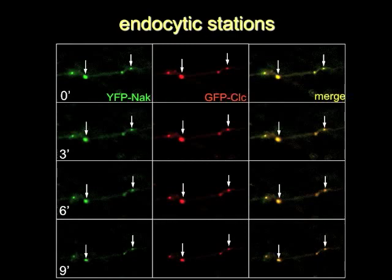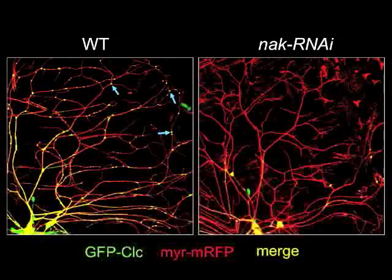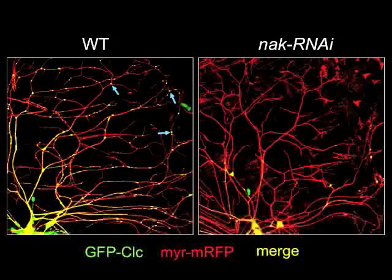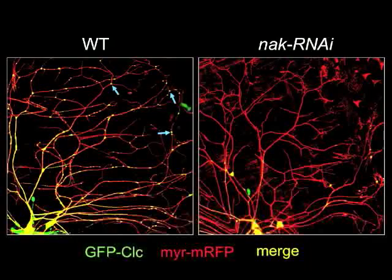Under time-lapse recording, we found that these endocytic puncta stay immobilized in the dendrite. Therefore, unlike Golgi outposts and Rab5, these endocytic puncta serve as stations to continuously boost local endocytosis. Many clathrin molecules can be concentrated into puncta to establish the endocytic station. In contrast to wild type, the Nak mutant dendrite failed to localize clathrin puncta in distal higher-order dendrites.